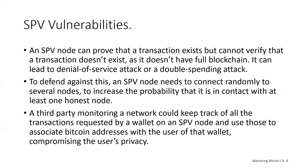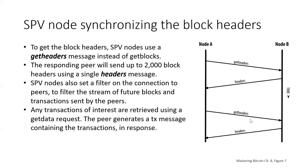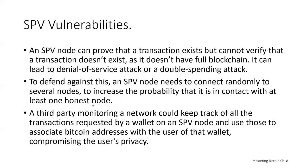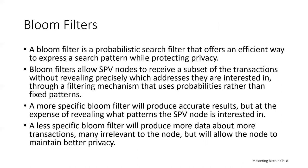To deal with this privacy vulnerability, SPV has included a technology called bloom filters. A bloom filter is a probabilistic search filter that offers an efficient way to express a search pattern while protecting privacy. These are used by SPV nodes to ask their peers for transactions matching a particular pattern without revealing exactly which addresses, keys, or transactions they're looking for.